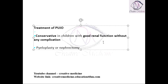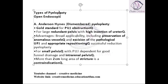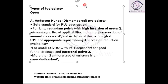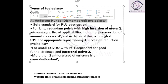If the patient's renal function deteriorates, then we can do a pyeloplasty, or a nephrectomy is done. Pyeloplasty can be done either by open method or by endoscopic method. In the open methods, the first type is Anderson-Heinz, or dismembered pyeloplasty, which is the gold standard technique for pelvic ureteric junction obstruction.